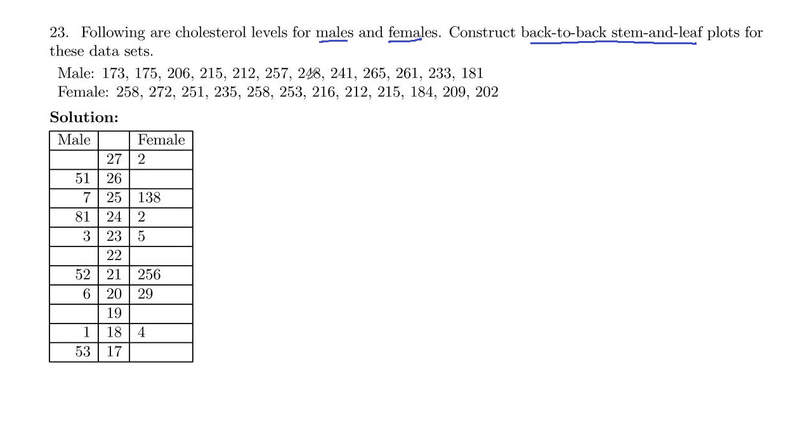So here's the male data, and here's the female data. Our back-to-back stem and leaf plot, our lowest cholesterol value out of all of them here is 173, and then our highest looks like 272. So our lowest stem will be 17, 17 tens, and our highest 27.